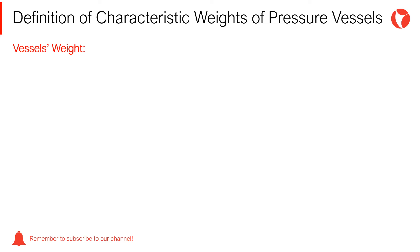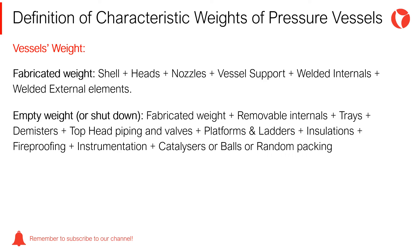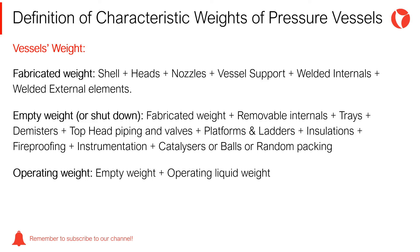Normally, the weights for the different phases in the life cycle of a pressure vessel are defined in the following way. Fabricated weight, necessary to determine the lifting load, cranes and equipment. Empty weight, useful to define the weight of the vessel during a shutdown of the plant. Operating weight, essential to calculate wind and seismic loads acting on the vessel. And finally, the test weight, needed to determine the loads acting on the foundation of the vessel.